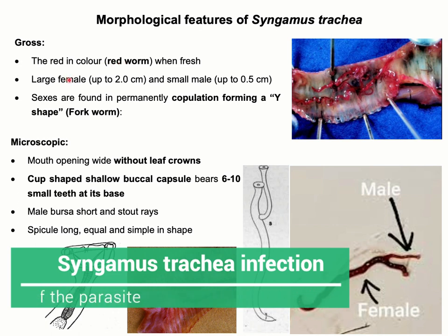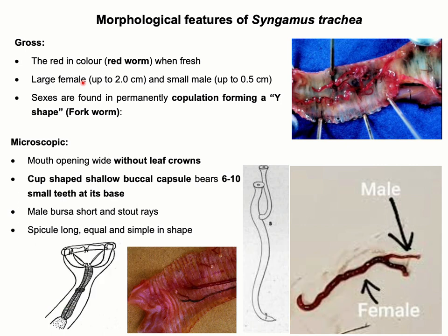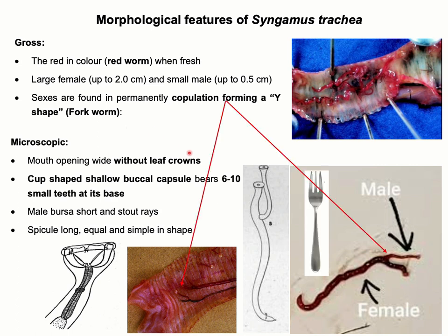Morphological features of Syngamus trachea: grossly, the parasite is bright red in color, therefore it is called red worm. The female parasite is around four times longer than the male — the female is around one to three centimeters in length, whereas the male parasite is about 0.5 to 2.5 centimeters in length. Both male and female are found permanently in copulation, forming a Y-shaped structure which looks like a fork, therefore this parasite is also known as fork worm.